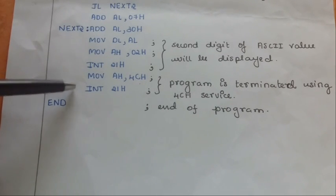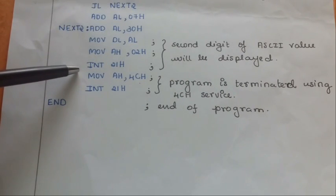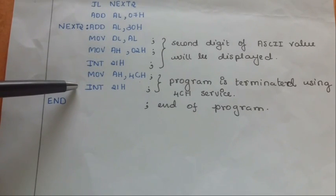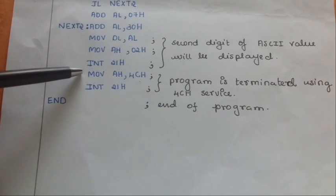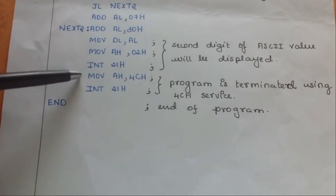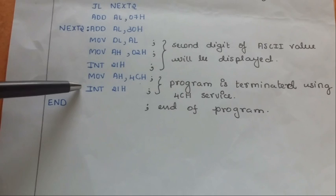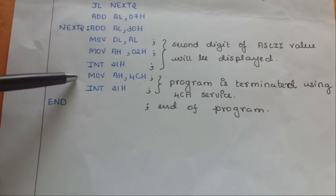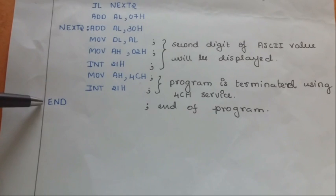The next two commands that is move is used to terminate the program. Here, the program is terminated using 4ch service. Instead of these two lines, you can even write interrupt which will also terminate the program. End denotes the end of the program.